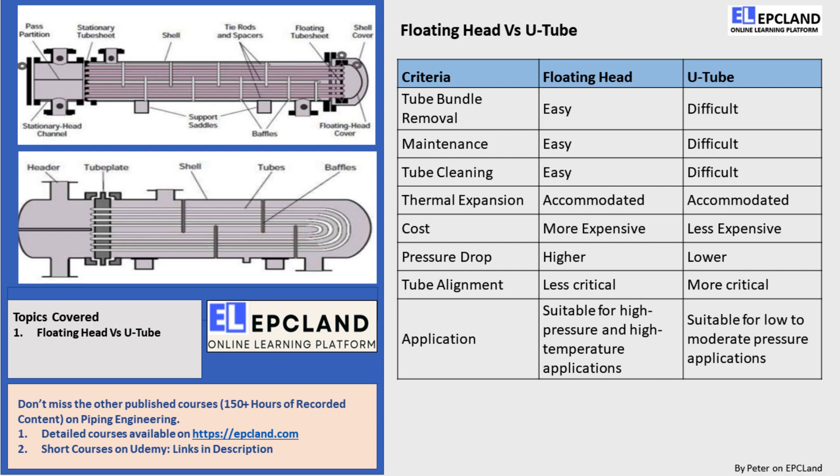This type of heat exchanger has a tube bundle that is easily removable for cleaning and maintenance purposes. It can also accommodate thermal expansion without any problems. However, it is a bit more expensive than a U-tube heat exchanger and has a higher pressure drop. So, if you're looking for a heat exchanger that can handle high pressure and high temperature applications, a floating head heat exchanger might be a better choice for you.